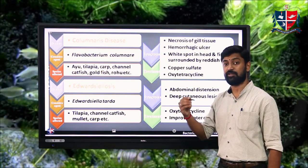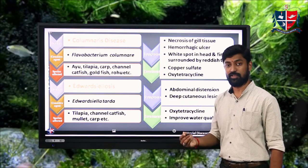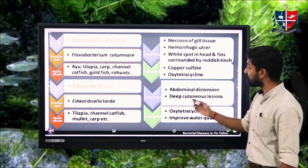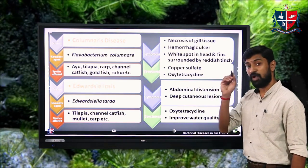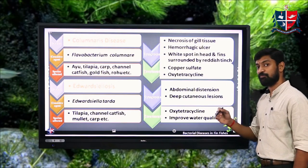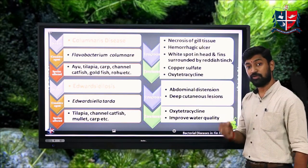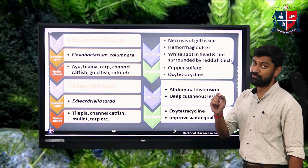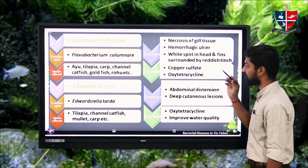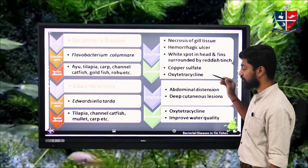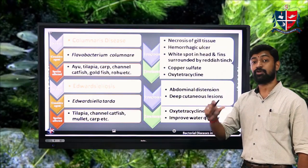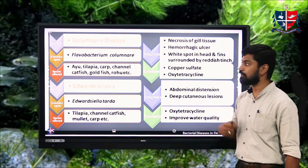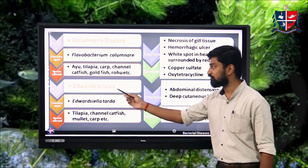Treatment methods for columnaris disease include maintaining good water quality, using antimicrobial agents and antibiotics. Copper sulfate and the antibiotic oxytetracycline applied through the feed are used to control and prevent columnaris disease.